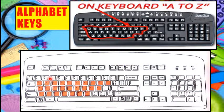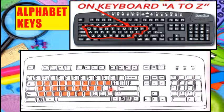Today, we will study two types of keys — alphabet keys and number keys. Can you see this keyboard? The keys which are colored red are called alphabet keys. Alphabet keys are A, B, C, D, E, F and so on till Z.